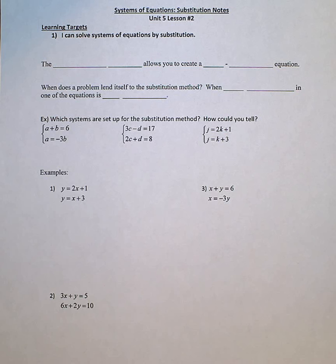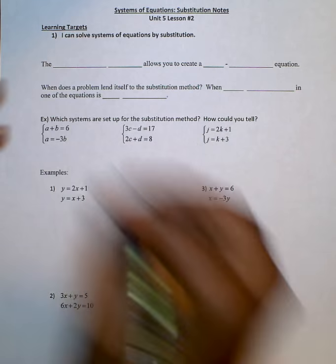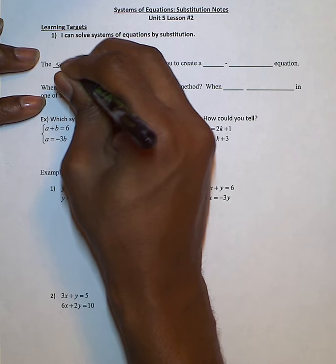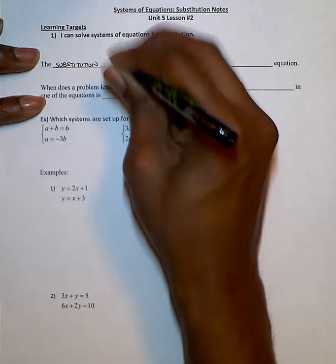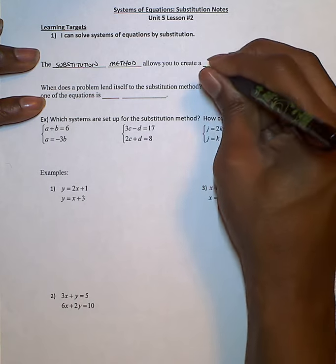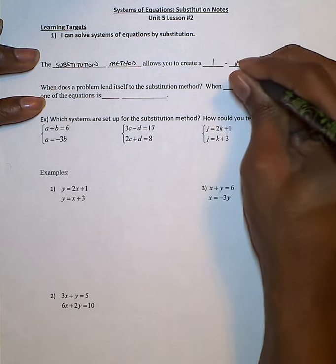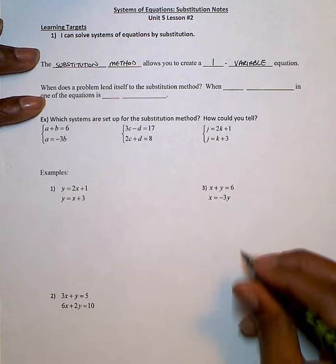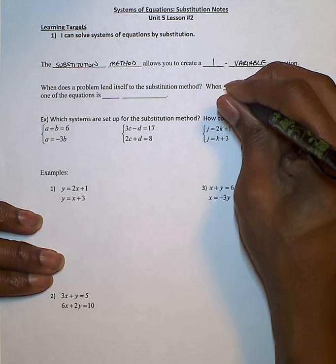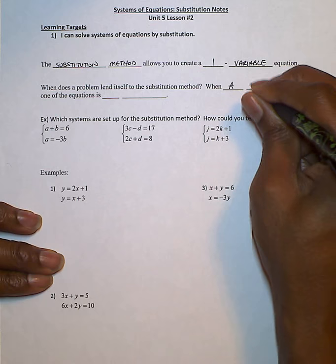The substitution method allows you to create a one-variable equation. To answer the question of when we use the substitution method, we probably want to know when a problem lends itself to the method, and that's when a variable in one of the equations is by itself.